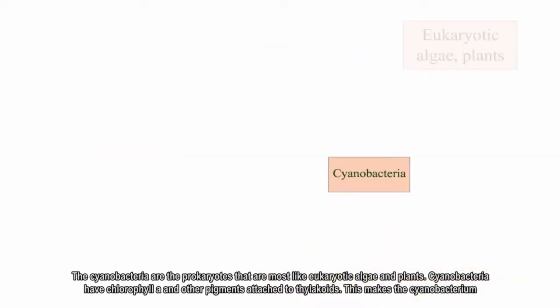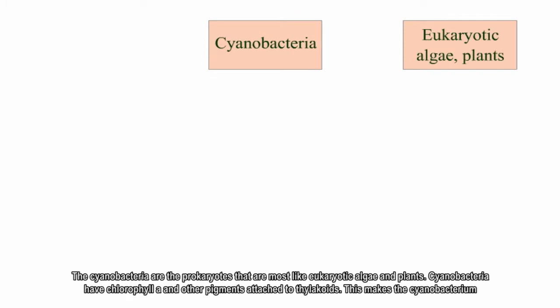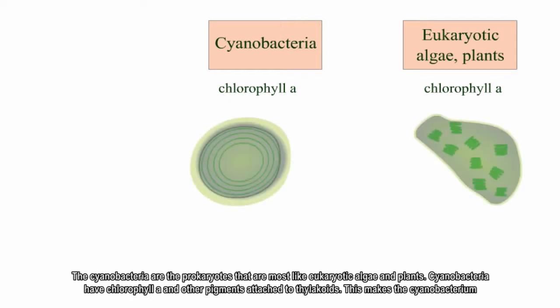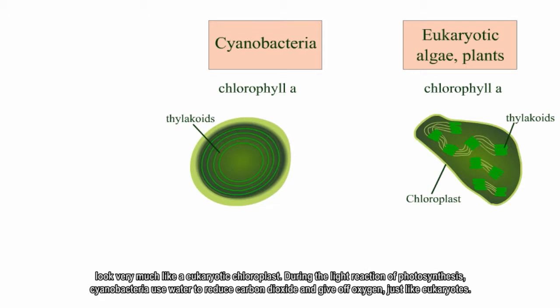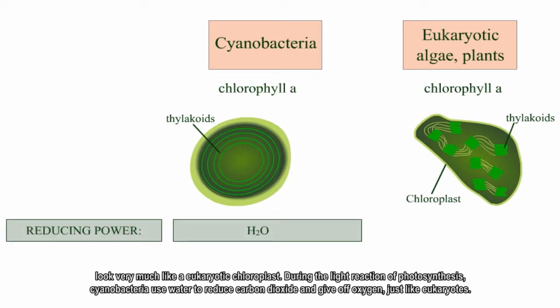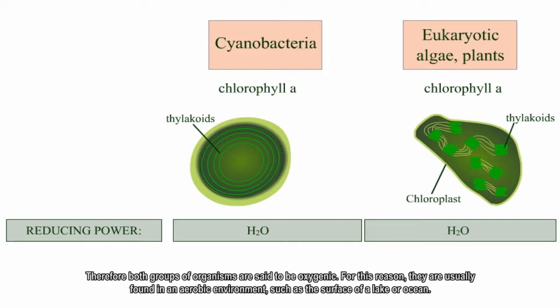The cyanobacteria are the prokaryotes that are most like eukaryotic algae and plants. Cyanobacteria have chlorophyll A and other pigments attached to thylakoids, which makes the cyanobacterium look very much like a eukaryotic chloroplast. During the light reaction of photosynthesis, cyanobacteria use water to reduce carbon dioxide and give off oxygen, just like eukaryotes. Therefore, both groups of organisms are said to be oxygenic.